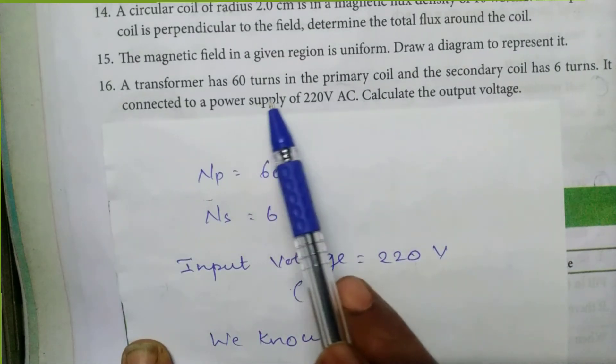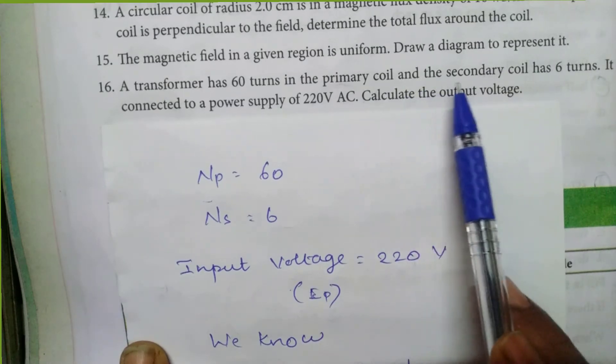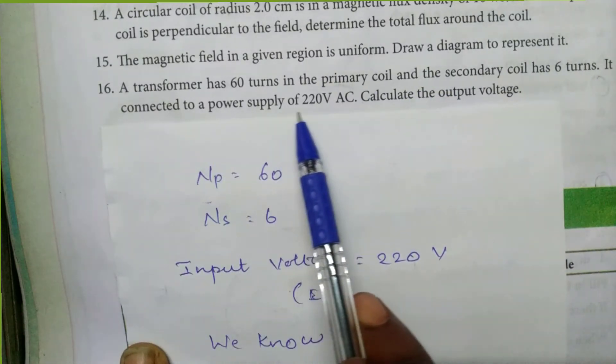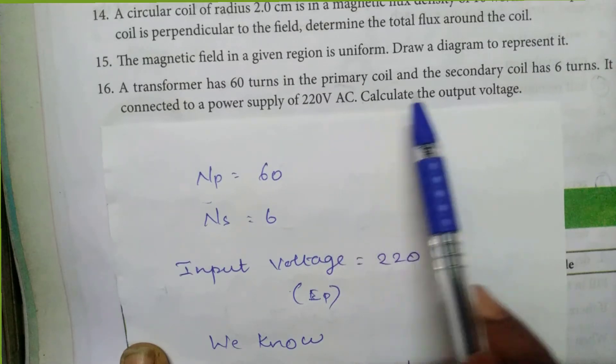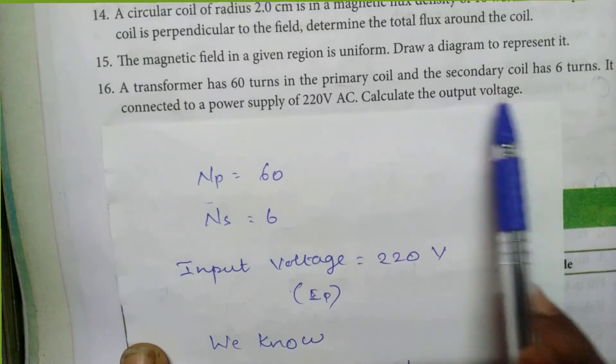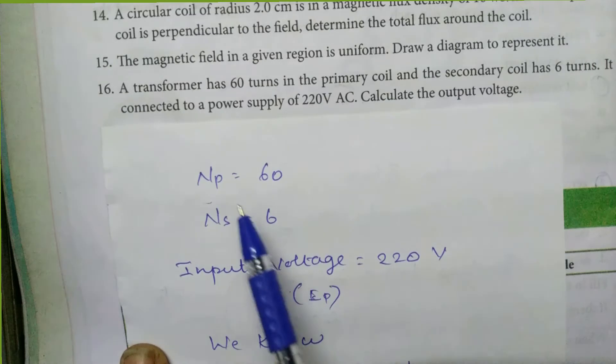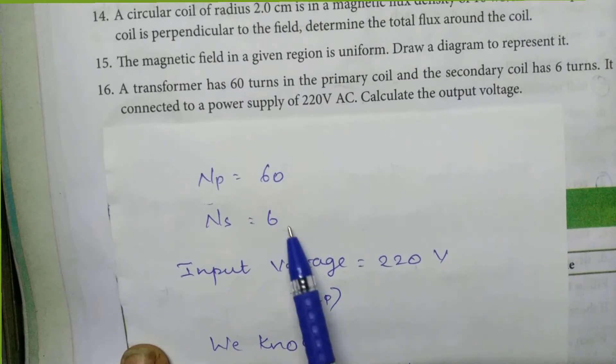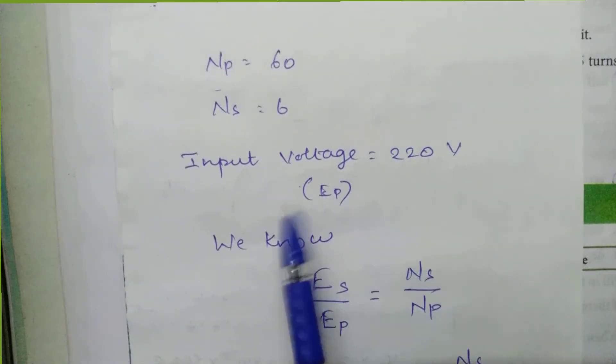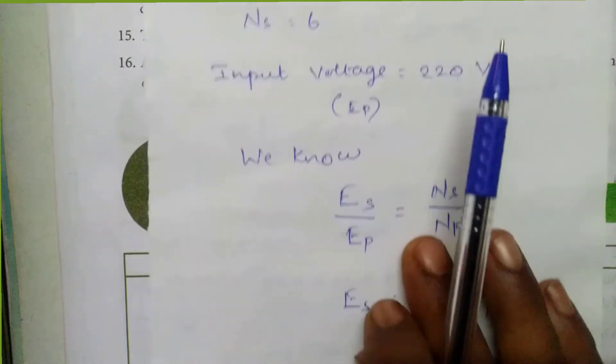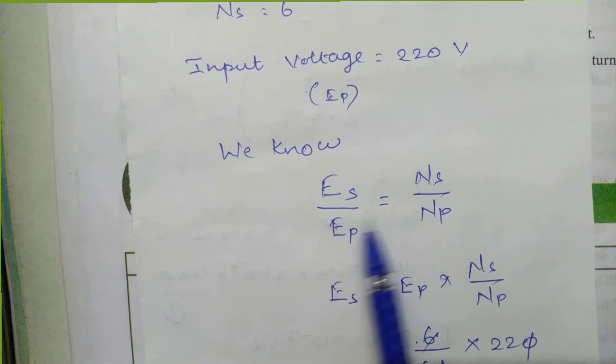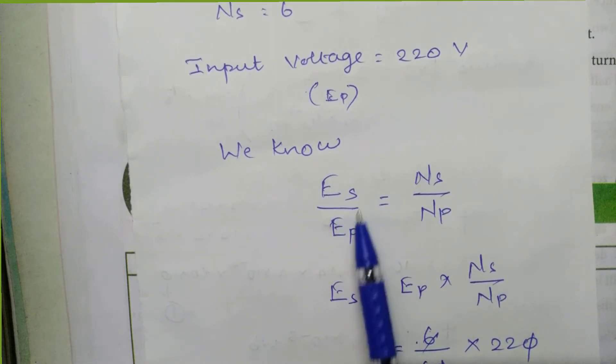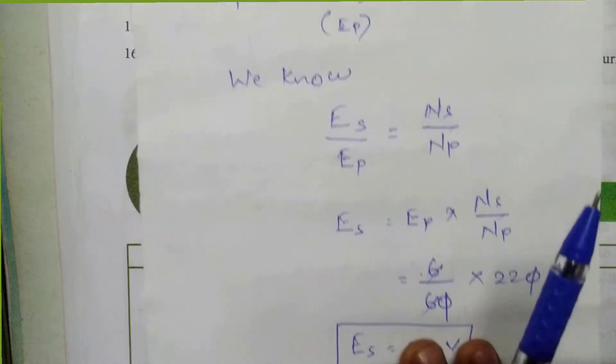A transformer has 60 turns in the primary coil and the secondary coil has 6 turns. It is connected to a power supply of 220 volt AC. Calculate the output voltage. Collect the information given: primary turns 60 and secondary turns 6. Then the input voltage given as 220 volt. We know the equation related to the voltage and the number of turns.